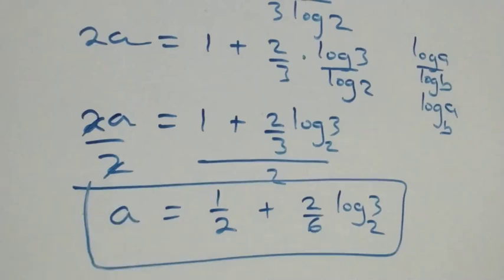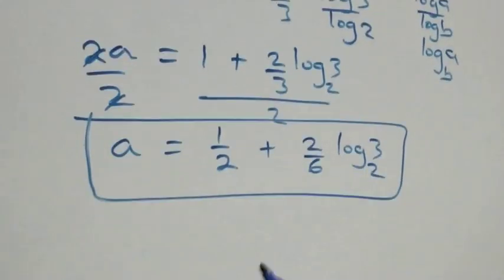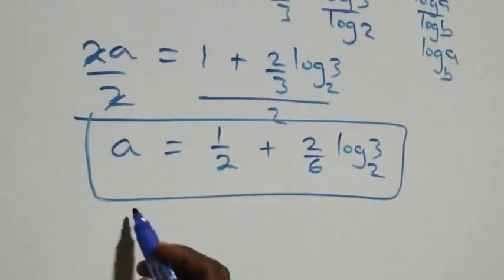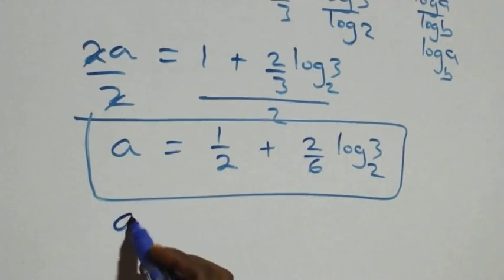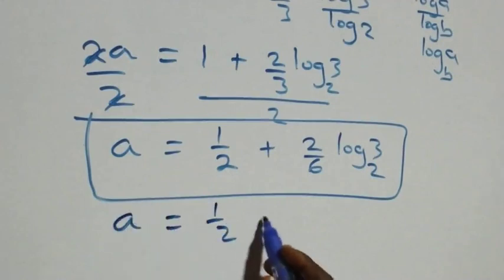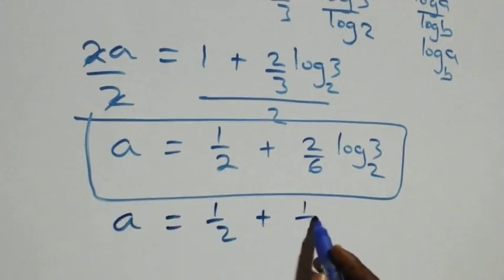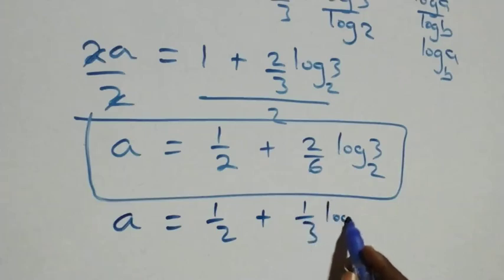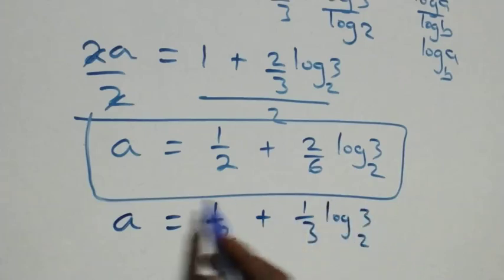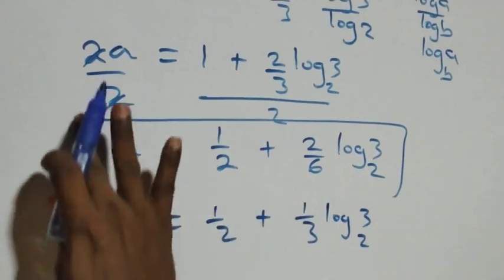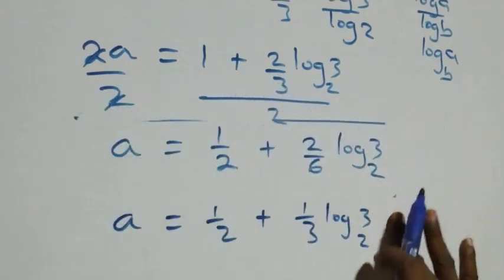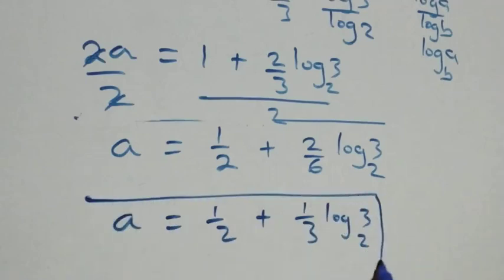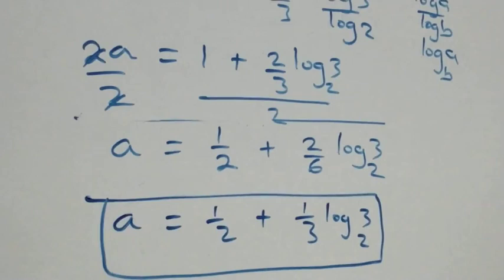So we have the value of a in this given problem as a equals 1/2 plus (1/3) log₂3. Now let's check if this satisfies the given problem.